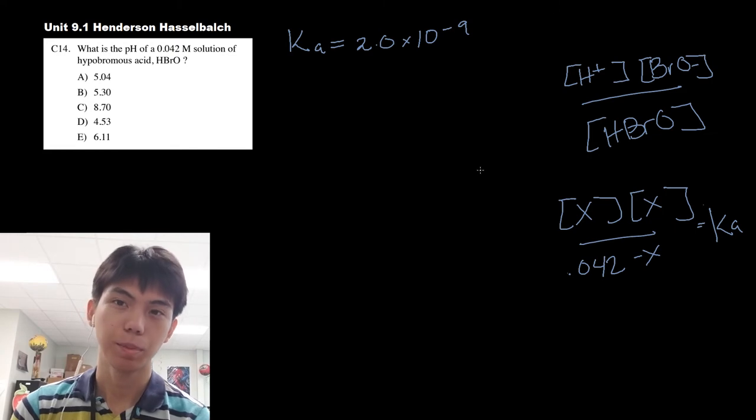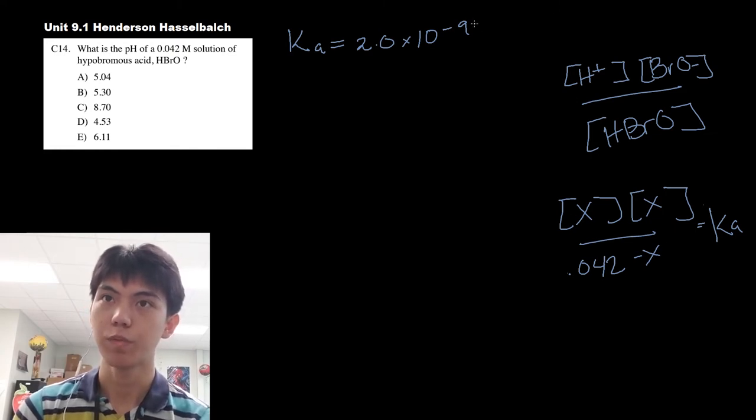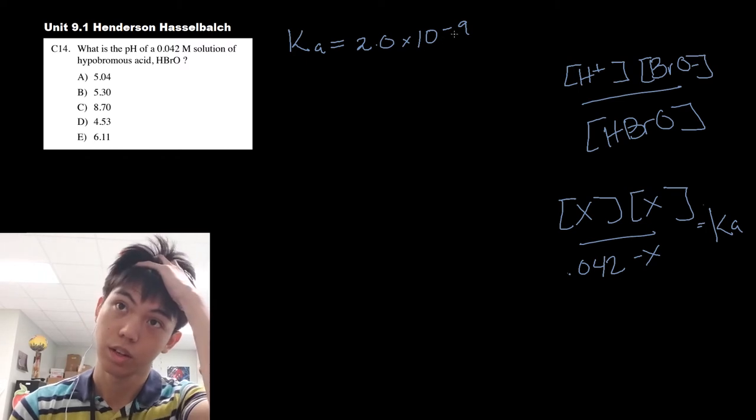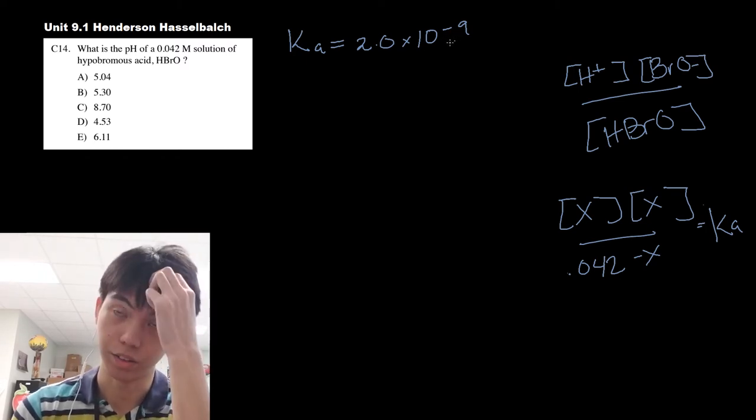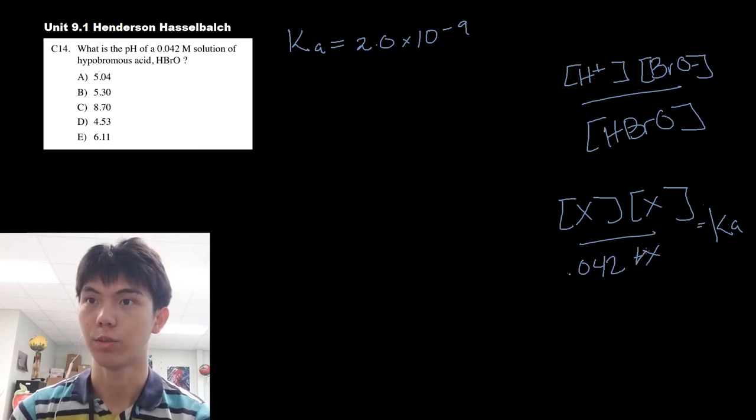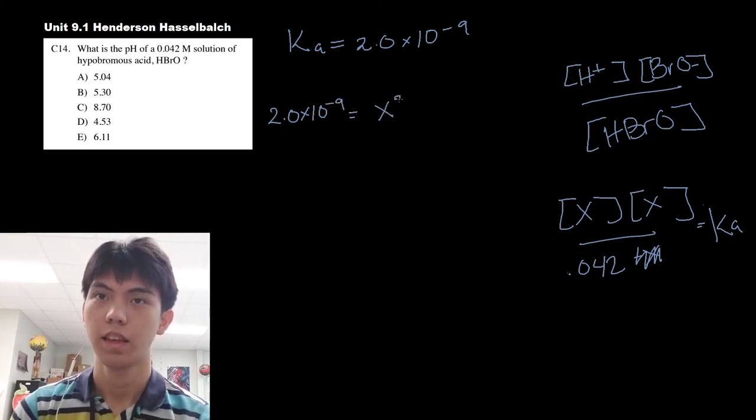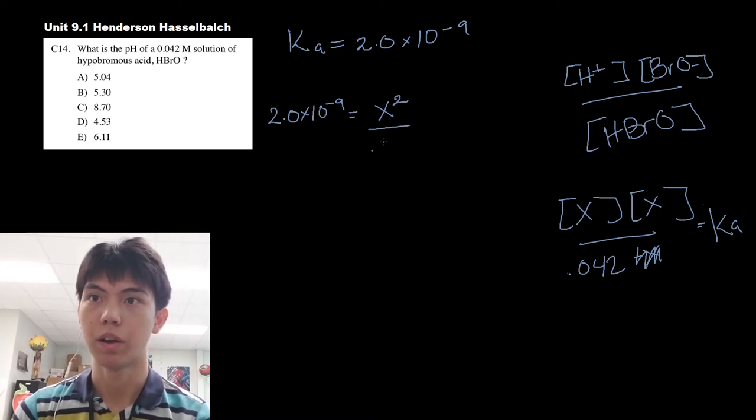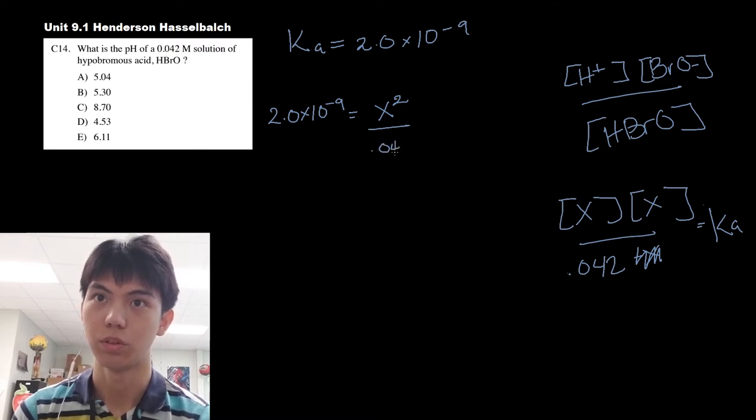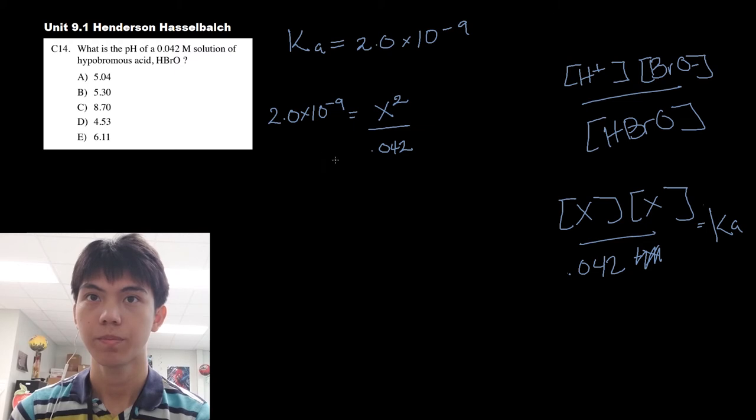We can apply this rule: if the Ka is small enough, so this Ka here is small to the point of being to the negative 9 zeros in front of it, we can omit this minus x right here. So what this overall becomes, 2.0, your Ka, times 10 to the negative 9 is equal to x squared. And all divided by 0.042. We cross multiply and take the square root to get your x.